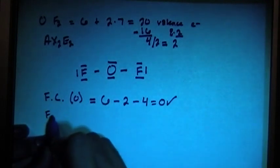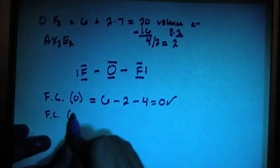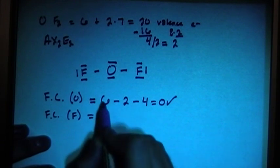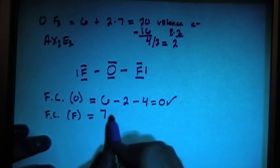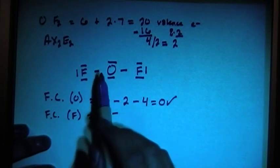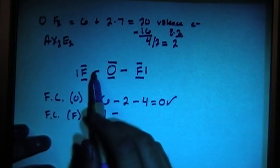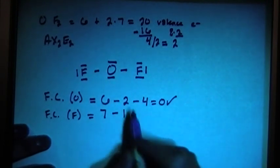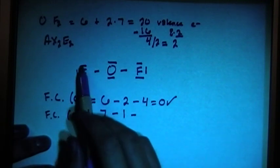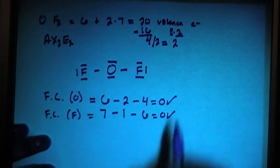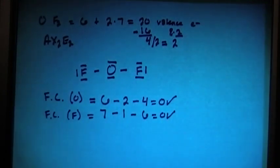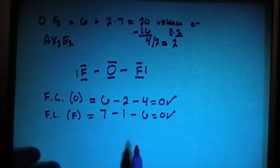Now we can check the formal charge of the fluorines. It's 7 because fluorine has 7 valence electrons. 7 minus the number of bonds, 1 bond on each fluorine, minus the number of unpaired electrons, 1, 2, 3, 4, 5, 6. That is going to give us 0 for both of the fluorines. So the formal charge is checked out. This is going to be an ideal molecule in that regard.